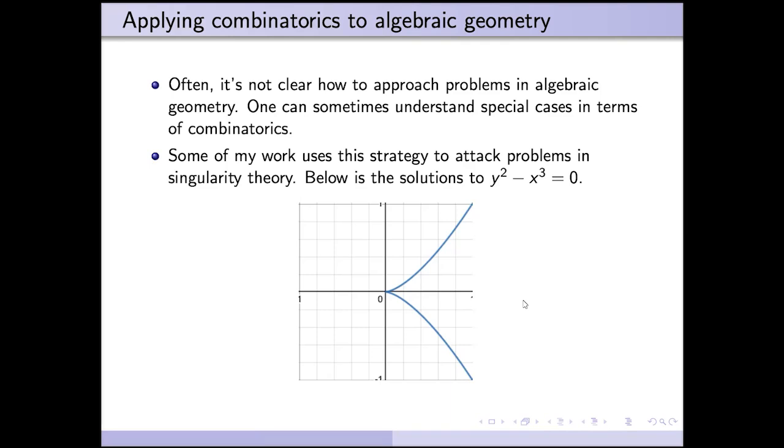I've used this approach to study problems in singularity theory. So here I have the graph y squared minus x cubed equals zero, and you can see that the graph looks a little funny at the origin. At the origin, at zero zero, there's what's called a singularity, and people are interested in understanding the properties of singularities. I've used combinatorial methods to solve some problems in singularity theory.